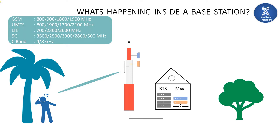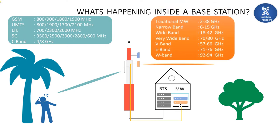Then the base station prepares and processes the data, generates baseband signals, and sends them to the microwave equipment. The microwave equipment modulates the baseband signal and sends it to the microwave antenna, which radiates electromagnetic waves through the atmosphere. In microwave, all the frequency bands are in gigahertz. The traditional microwave frequencies are 2 to 38 GHz, but nowadays we have come up with new frequency bands called millimeter waves — there are V band, E band, and W bands.